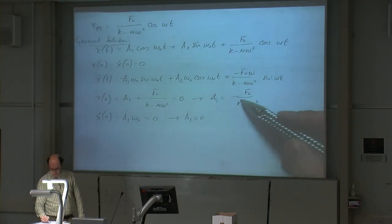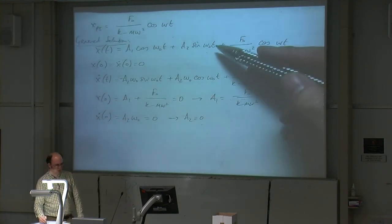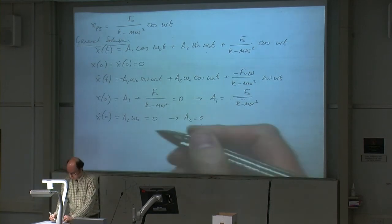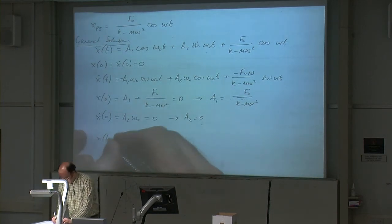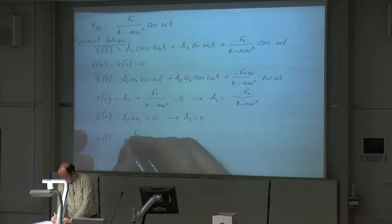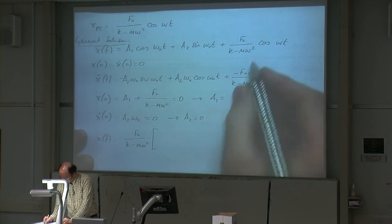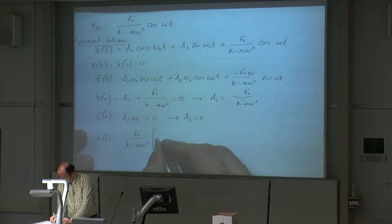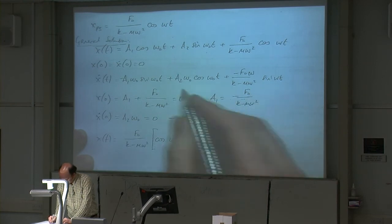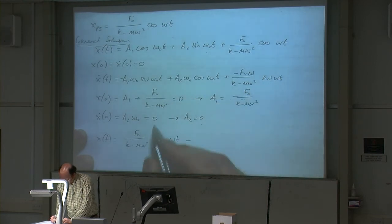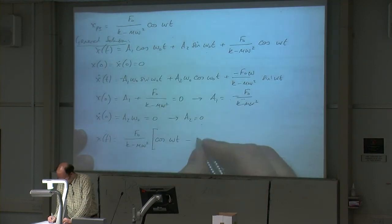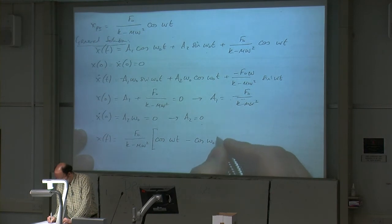So we plug these values for a1 and a2 back into our general solution, and we end up with x of t equal to f0 divided by (k minus m omega squared) times (cosine omega t minus cosine omega-naught t).